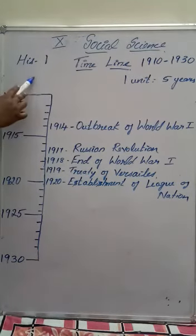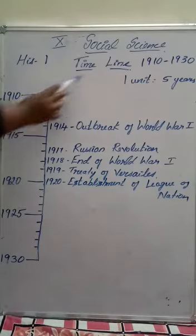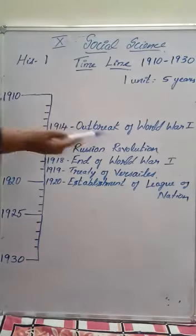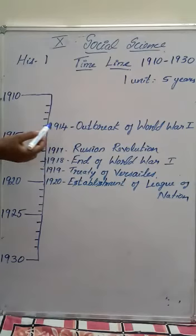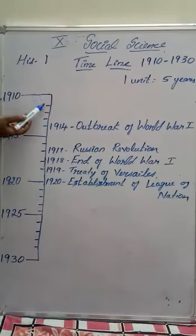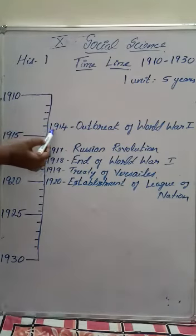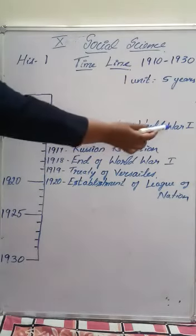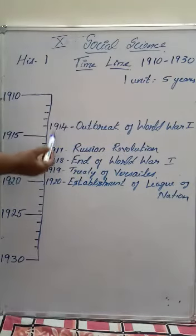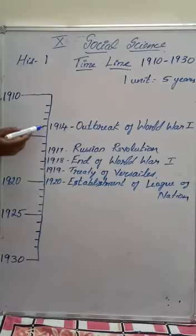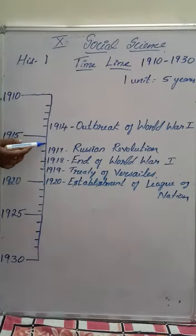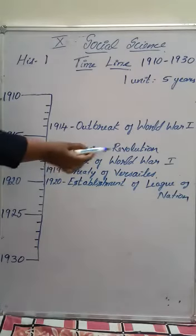Now in the first lesson, during this period between 1910 to 1930, what were the events that happened? We all know that during 1914 the First World War started. So from 1910, count 1, 2, 3, 4 — that is 1914 — and mark: outbreak of First World War. The next one is during 1917 the Russian Revolution occurred. After 1914, count 15, 16, 17 and mark Russian Revolution.